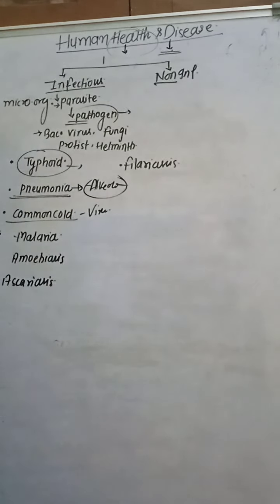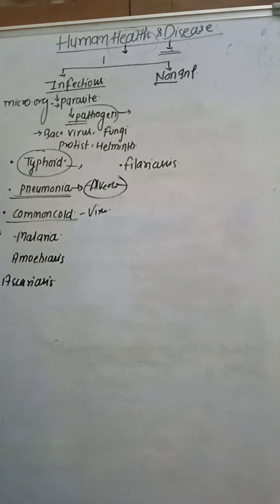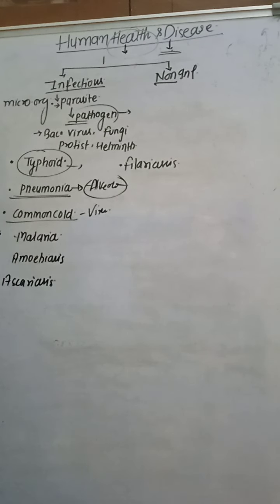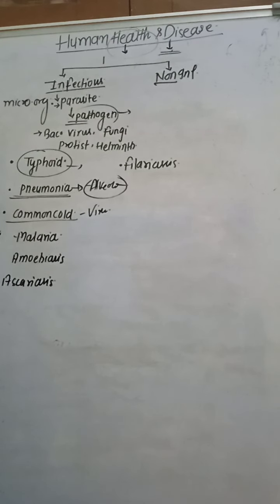Next is the common cold, caused by rhinoviruses - the most contagious and commonly occurring disease in humans. It infects only the upper respiratory system, not the lungs - like the trachea, nasal cavity, and nose. Symptoms include nasal congestion, hoarseness, cough, sneezing, weakness, loss of appetite, and fever.